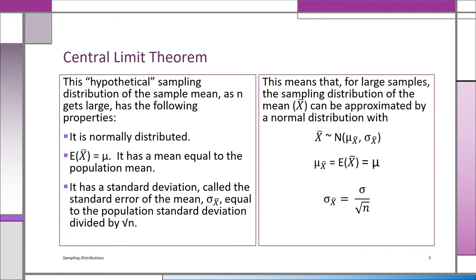Now, what about the standard deviation? We call it the standard deviation of the x-bars, shown as sigma x-bar. The standard error of the mean, sigma x-bar, equals the population standard deviation divided by the square root of n. So for large samples, the sampling distribution of the mean can be approximated with a normal distribution. The expected value of x-bar is mu, and the standard error of the mean is sigma over the square root of n.